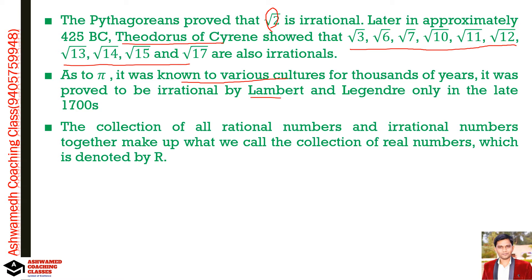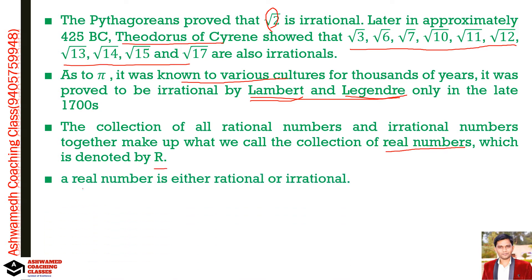Pi was proved to be irrational by d'Alembert and Legendre. The collection of all rational numbers and irrational numbers together makes up what we call the set of real numbers, denoted by R. So every number in the set of real numbers is either rational or irrational.